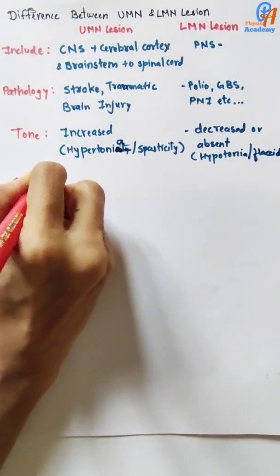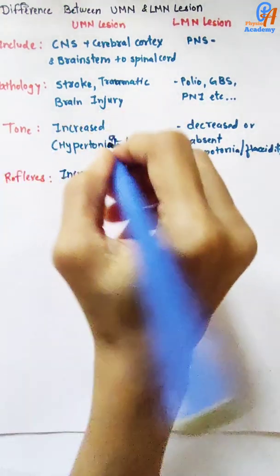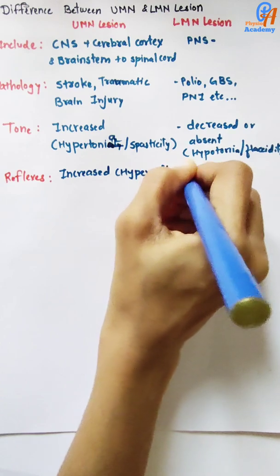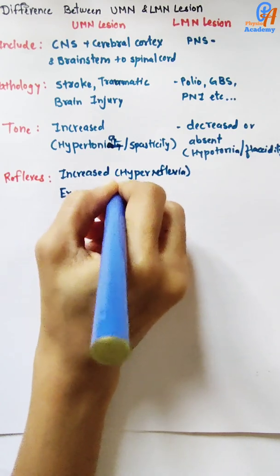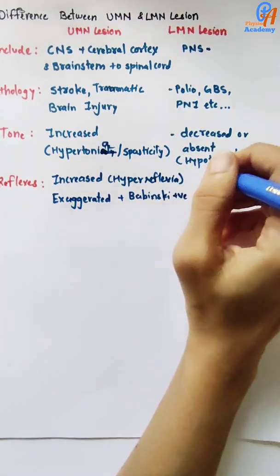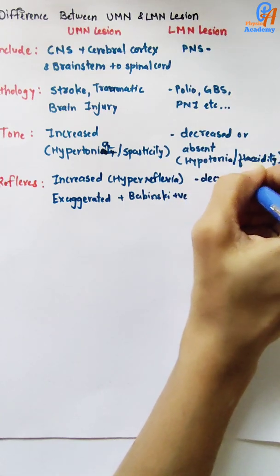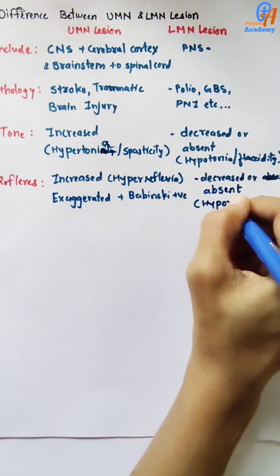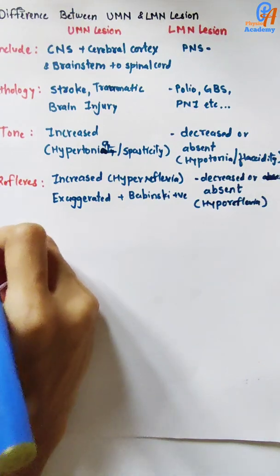Regarding reflexes: in upper motor neuron lesion, reflexes are increased — hyperreflexia and a positive Babinski sign are seen. In lower motor neuron lesion, reflexes are decreased or absent — hyporeflexia is seen.